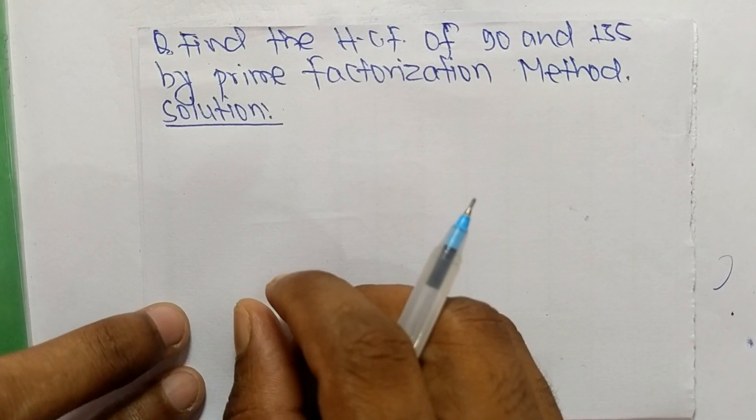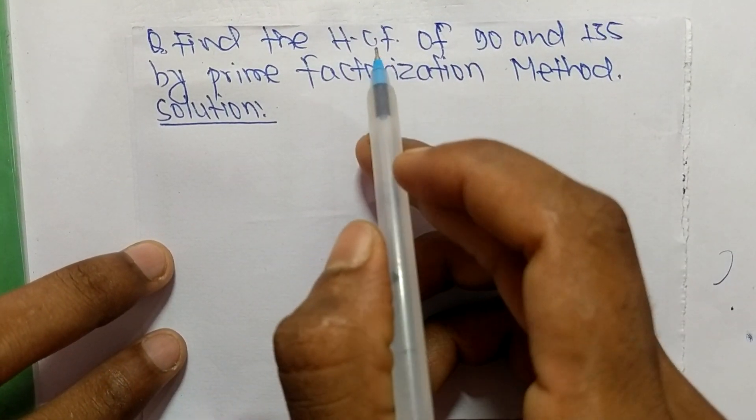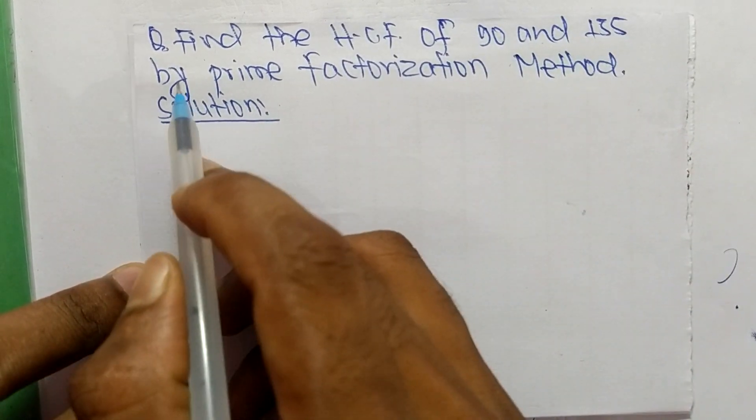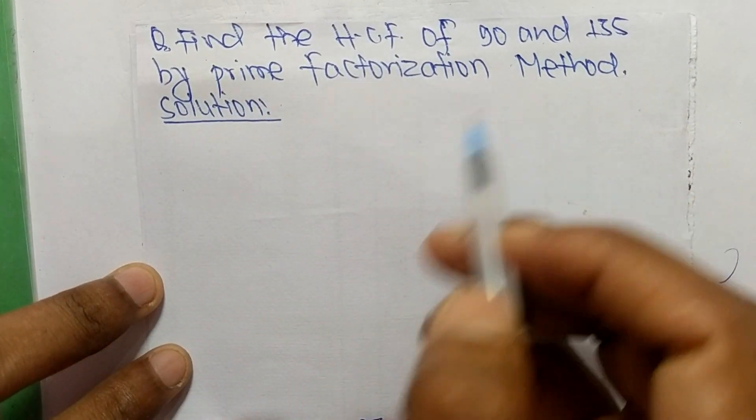So today in this video we shall learn to find the HCF of 90 and 135 by prime factorization method.